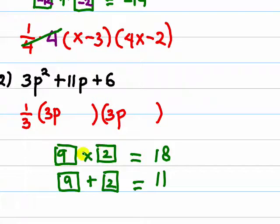Since those are positive, we can consider this as plus 9 and plus 2. So we put here plus 9 and plus 2.